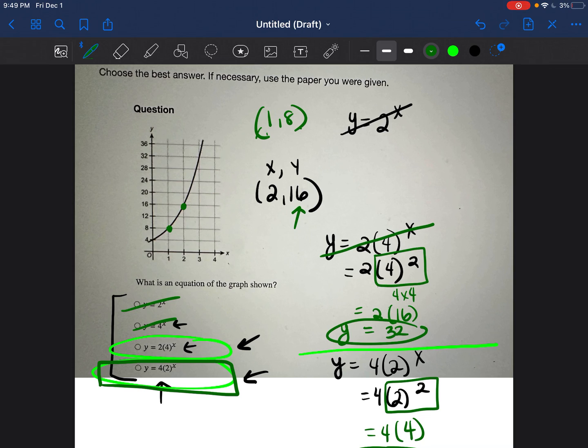So what did we have to do then? We have to choose another point on the line. And that's when we chose 2 comma 16. And then we plugged in those numbers into the equations. When we plugged in 2 in both of those equations for x, then we were able to see which one would give us 16 for y. And that's how we decided on that last equation.